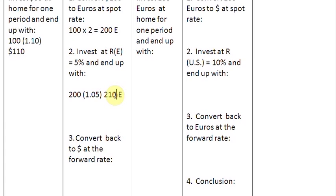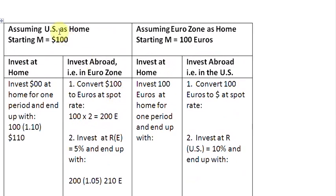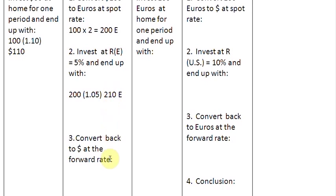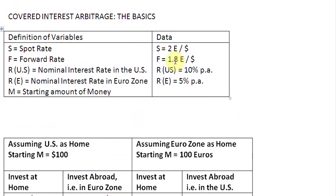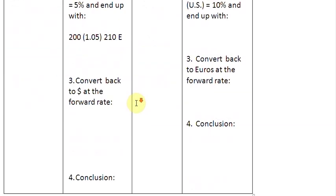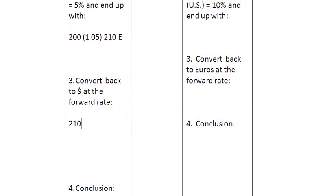What are we going to do with these 210 euros? Since we assumed the US as our home country, we are going to bring this money back at the forward rate, which is 1.8 euros to a dollar. We want to convert our euros back to dollars, so we are moving from the numerator currency to the denominator currency — we divide. We divide 210 by 1.8, and that gives us $116.67.